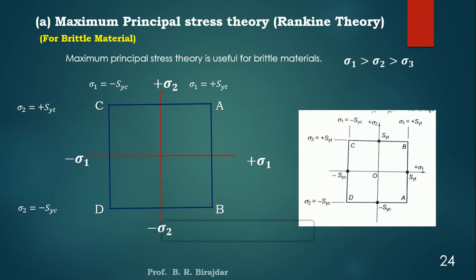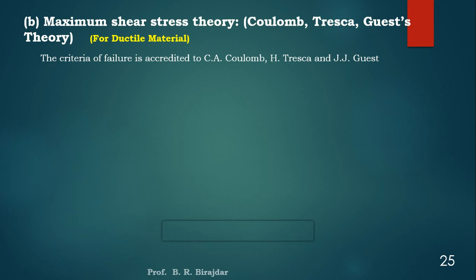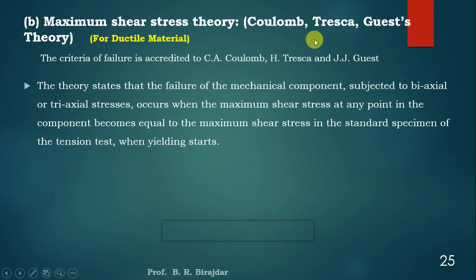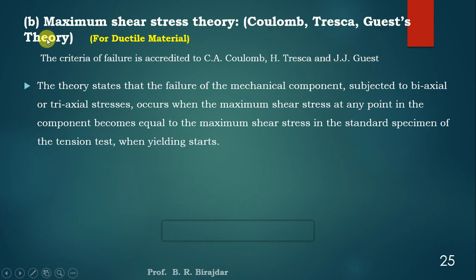The experimental investigation suggests that the maximum principal stress theory gives good prediction for brittle material. However, it is not recommended for ductile material. Now the second theory is the maximum shear stress theory, also called the Coulomb-Tresca theory. This theory is used for ductile material. The criteria of failure is accredited to Coulomb, H. Tresca, and J.J. Guest — that is why it is called the Coulomb-Tresca-Guest theory.